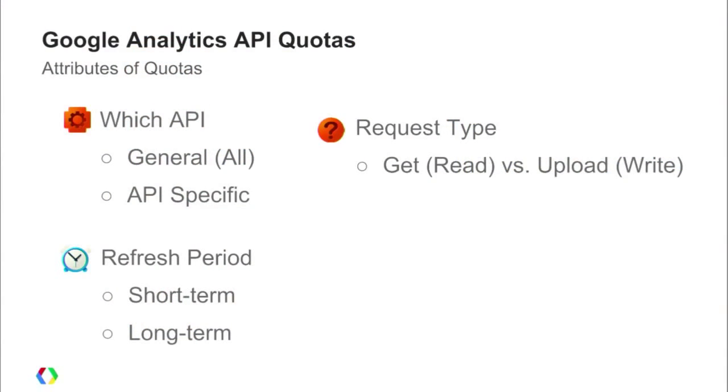Another aspect when defining quota types is what type of request it is. A GET or read-only request is very different from an upload request, which can actually incur more CPU processing. We need to consider that when coming up with different quota policies. The quota numbers aren't arbitrary — we look at all the use cases to make sure we're not restricting any use case, enabling all the things that developers want to do and all the great apps they want to build.